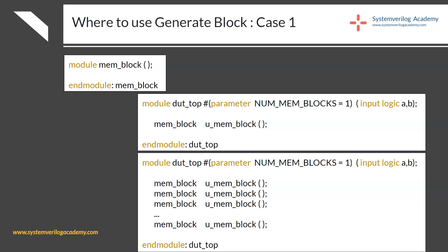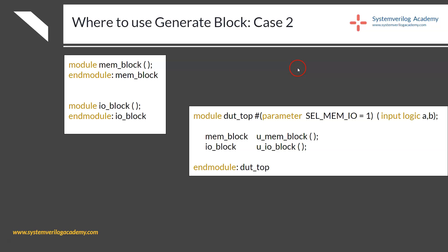The second case involves two sub-blocks, MemBlock and IOBlock, within a top-level module. Based on the value of a parameter, you want to instantiate either MemBlock or IOBlock — for example, if the parameter is 1, instantiate MemBlock; otherwise, instantiate IOBlock. This is a scenario where you want to conditionally generate some set of code in the RTL, which is another use case for the generate block.